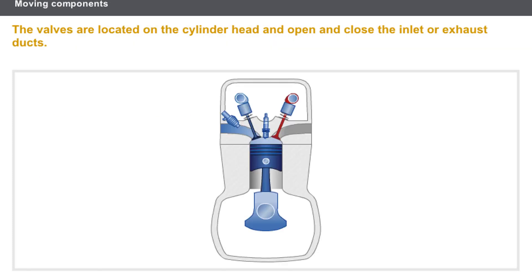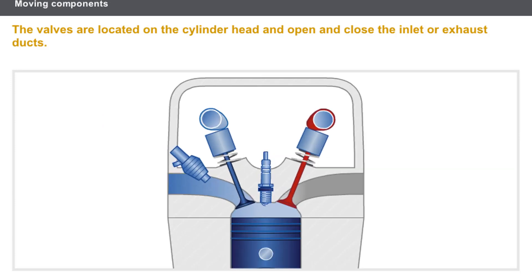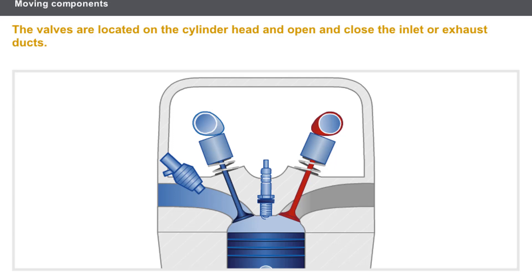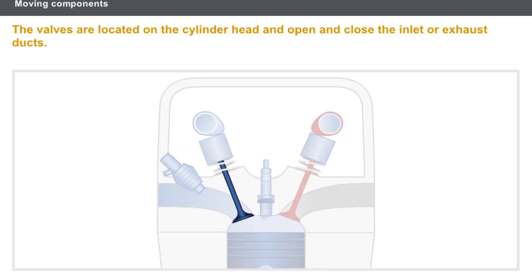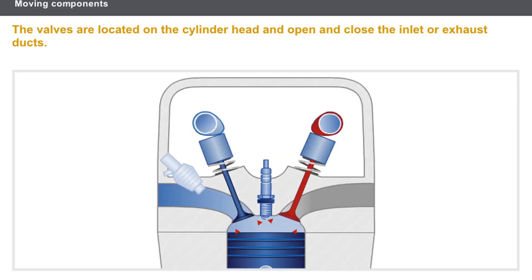The valves are located on the cylinder head and open and close the inlet or exhaust ducts. There are two types of valve: inlet valves, which allow the gases to enter the cylinder, and exhaust valves, which control the evacuation of the burnt gases. The spring keeps the valve on its seat when there is no force from the camshaft, and the seal between the valve and its seat must be perfect.